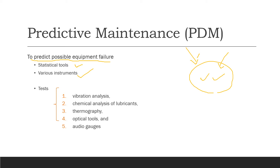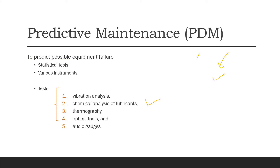The predictive maintenance program requires testing: vibration test, chemical analysis, temperature test, optical tools, and audio gauges. You do all kinds of testing to maintain your system in predictive maintenance.